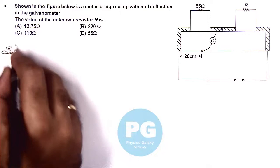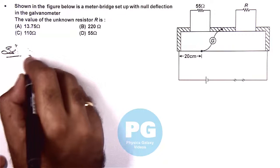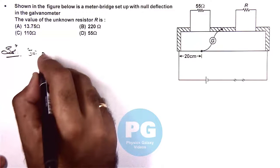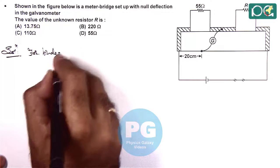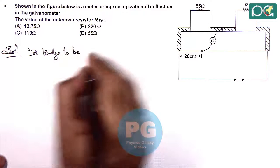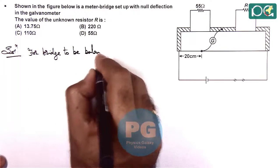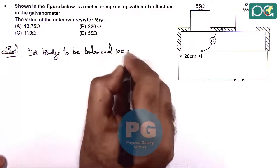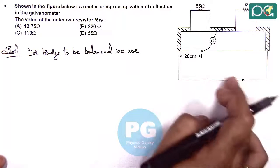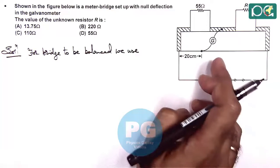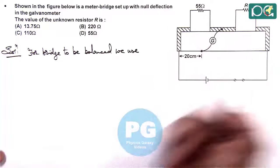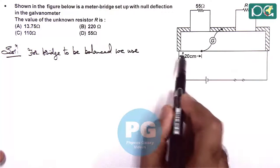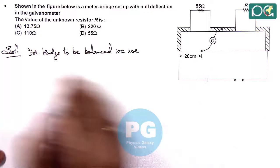For the bridge to be balanced, we use the balancing condition. The ratio of these two resistances and these two resistances are equal. On the meter bridge wire, the resistance is proportional to its length.